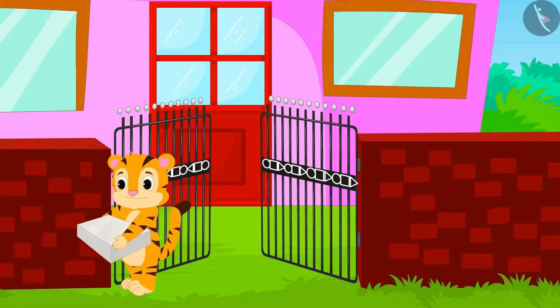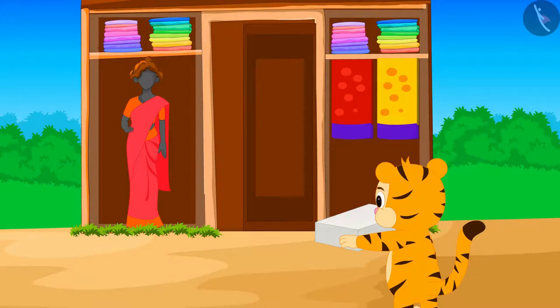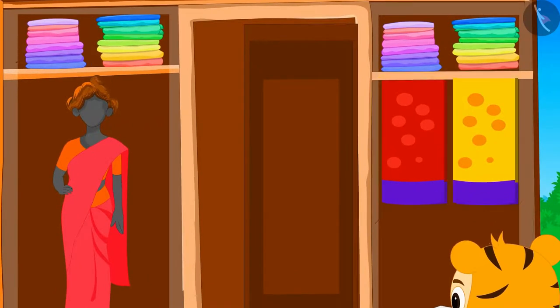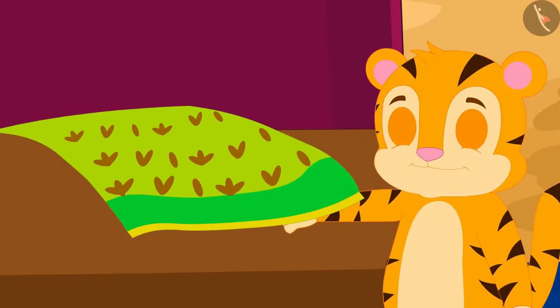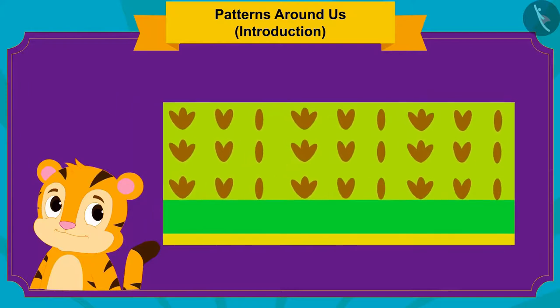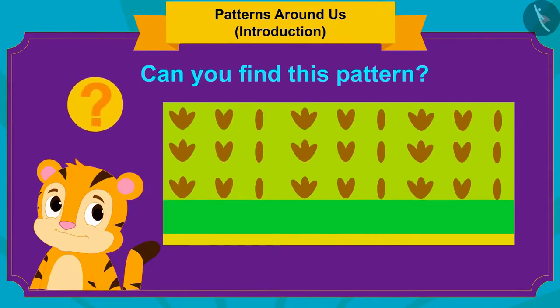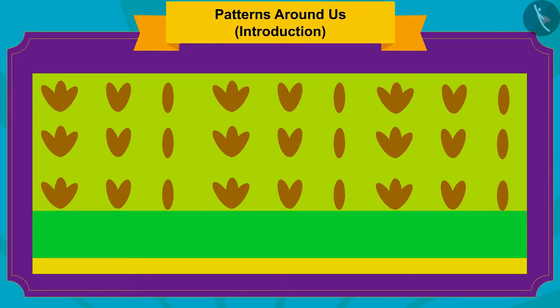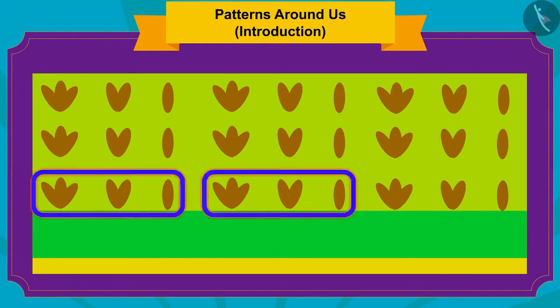Sher Khan bought the cake and has now come to buy a saree for his mother. The saree shop has beautiful sarees of various designs. Sher Khan liked a saree of this design very much and noticed that this saree also has a unique pattern. Children, can you find this pattern? Here, a pattern having three, two, and one leaf of the same shape is repeating, thereby forming a pattern.